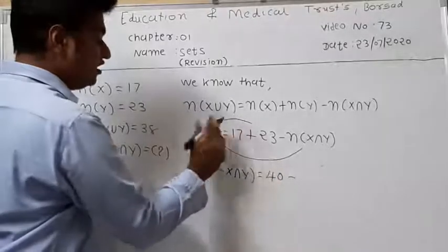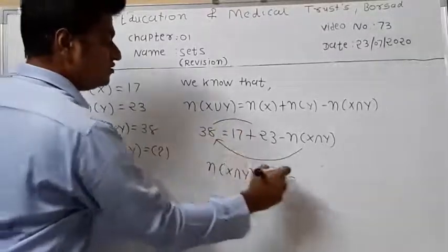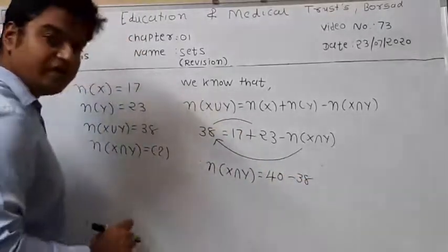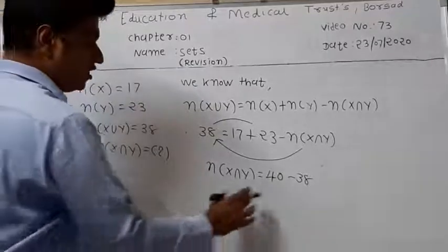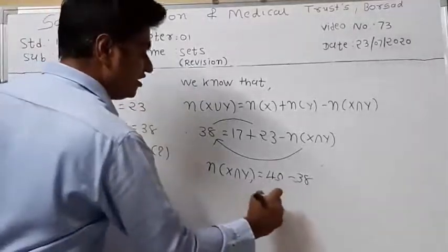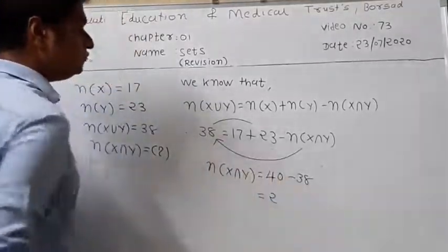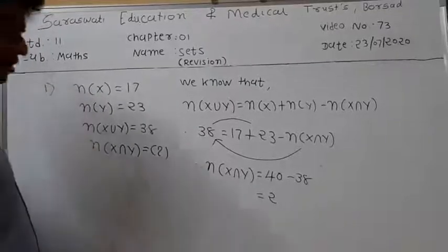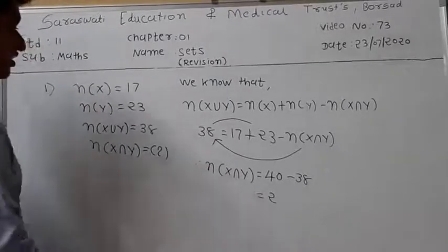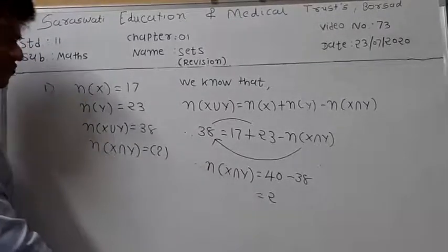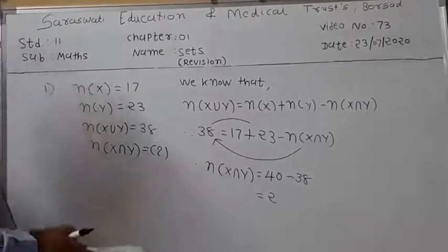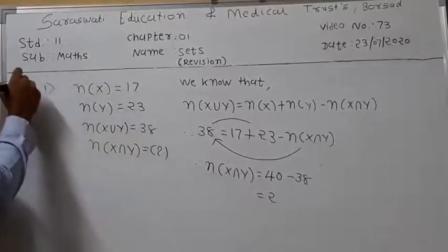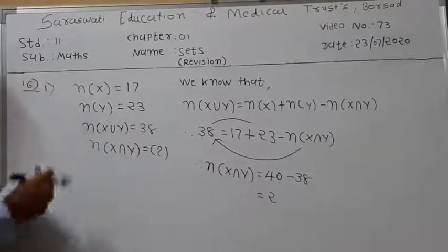Changing the sign to positive, we get the value of N of X intersection Y is equal to 2. Now exercise 1.6, question number 3.